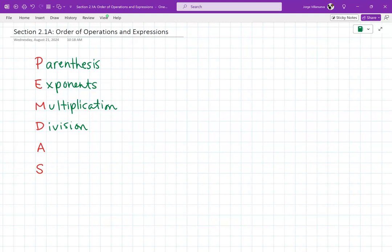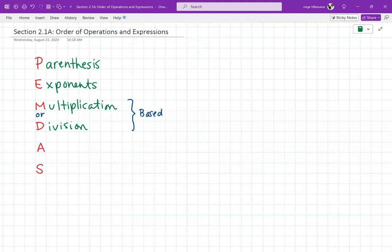This is actually supposed to be an or in between here. You multiply or divide depending on what is coming up from left to right, based on left to right arithmetic. So in other words, as you guys are looking at the problem and you're reading it, from left to right, if division pops up first, then you've got to divide first. If multiplication pops up first, then you multiply first.